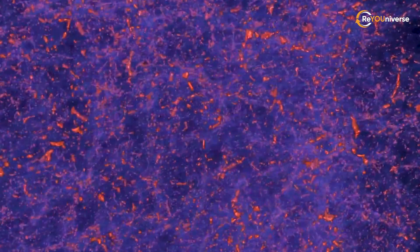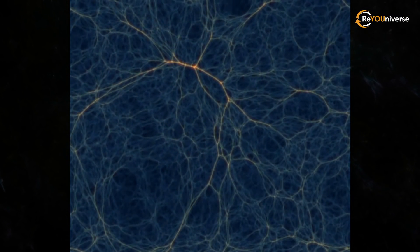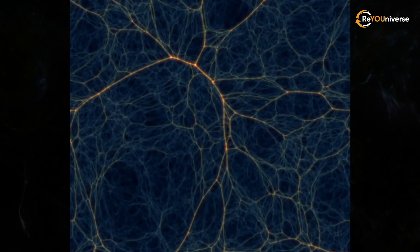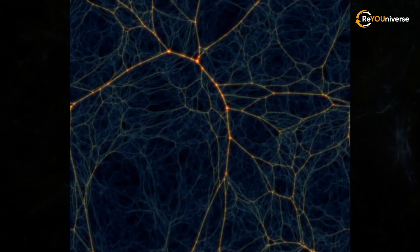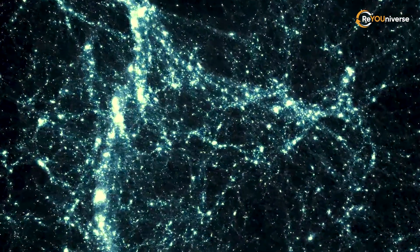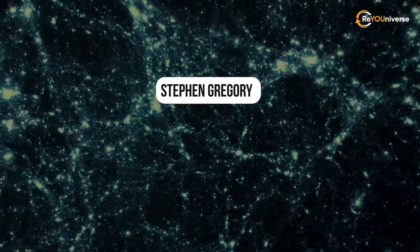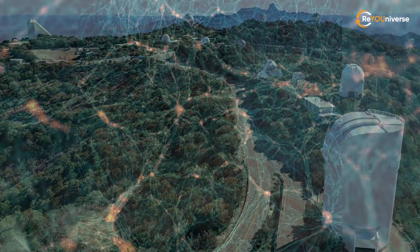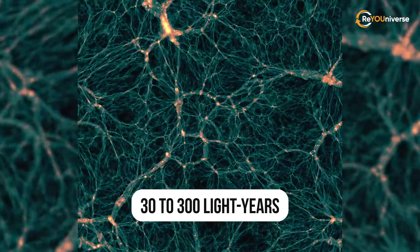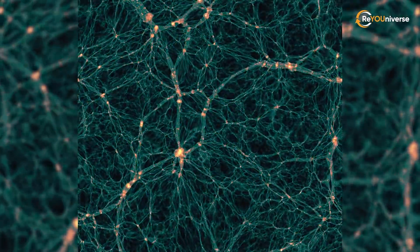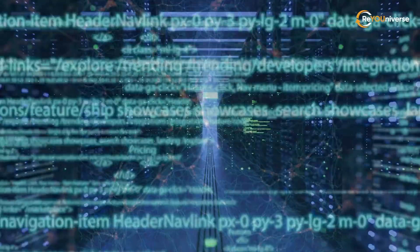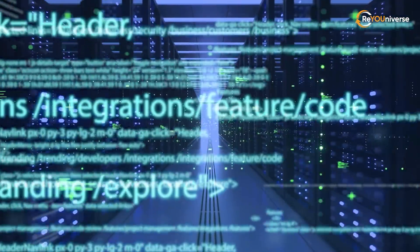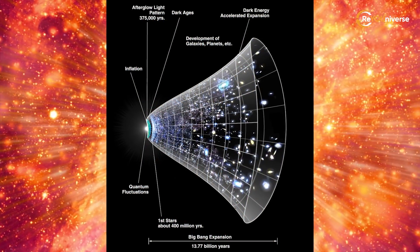Scientists have known about voids for quite a while. These are vast areas between galactic filaments where there are hardly any galaxies or clusters. Therefore, their density is about 10 times lower than in other parts of the universe. Voids were first discovered in 1978 by Stephen Gregory and Laird A. Thompson at Kitt Peak National Observatory in Arizona. They range in size from 30 to 300 light years. But 2 billion years is too much.